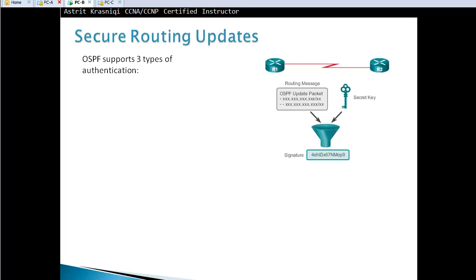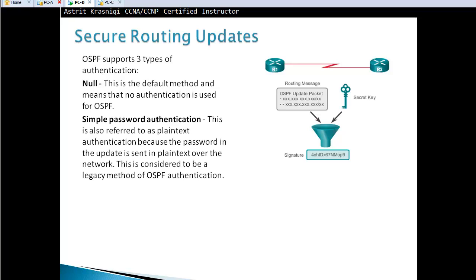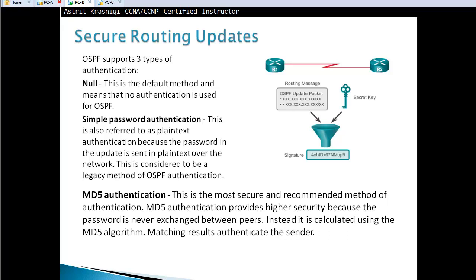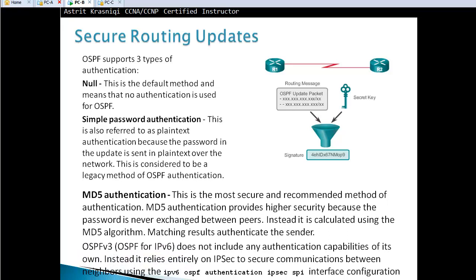OSPF version 3 supports three types of authentication: null (no authentication), simple password authentication (plain text), and MD5 (encrypted). OSPFv3 for IPv6 does not include authentication capabilities of its own — instead it relies entirely on IPSec to secure communication between neighbors, using the 'ipv6 ospf authentication ipsec spi' interface configuration.